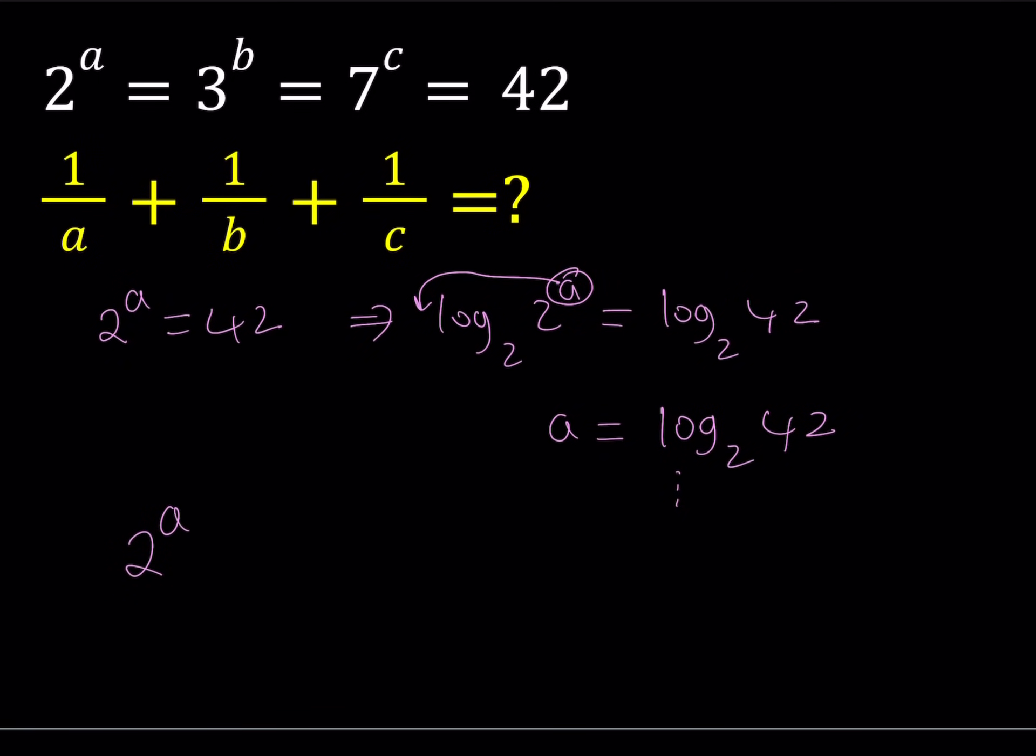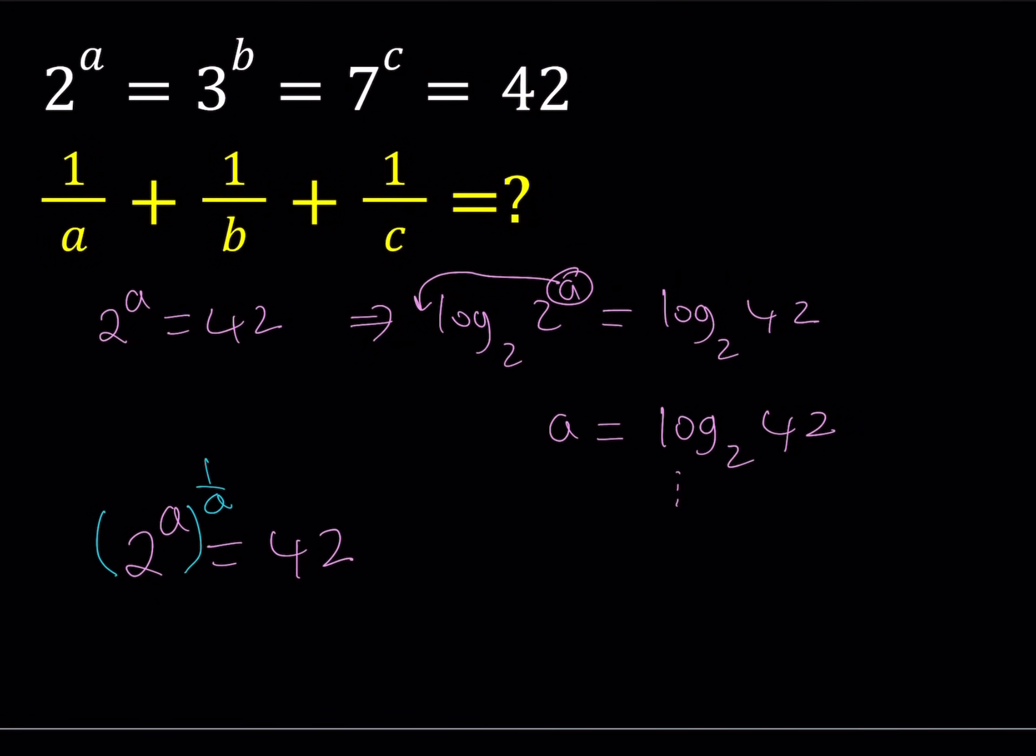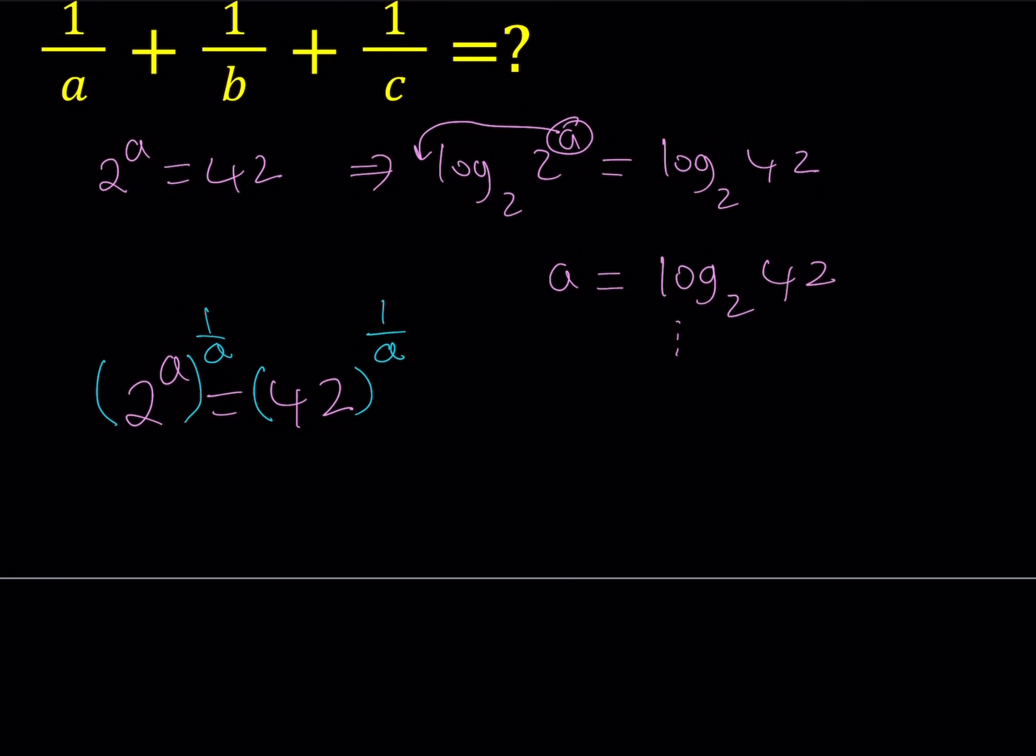Take a look at this equation: 2 to the power A is equal to 42. Well, since A, B, C are not 0 (they can't be 0 because otherwise the answer would be 1), we can basically do the following. We can raise both sides to another power, right? For example, I can just take this and raise it to the power 1 over A, and of course that means I have to do the same thing on the right-hand side. It's kind of like taking the Ath root, but A doesn't have to be an integer, so I wasn't using the root notation here.